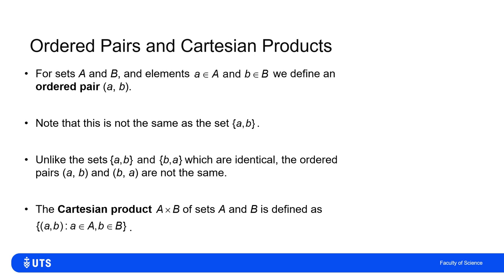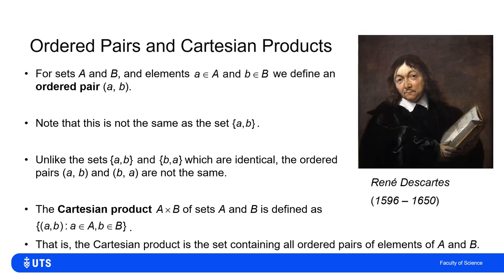Now, as the name suggests, Cartesian product is named after the French mathematician René Descartes, a man who allegedly thinks, therefore he is.